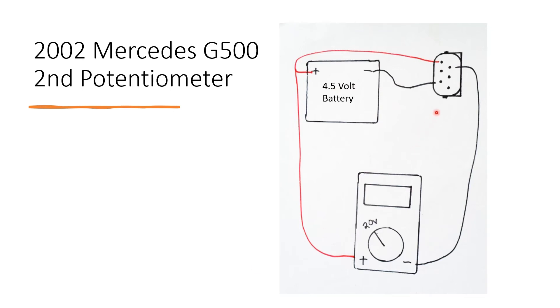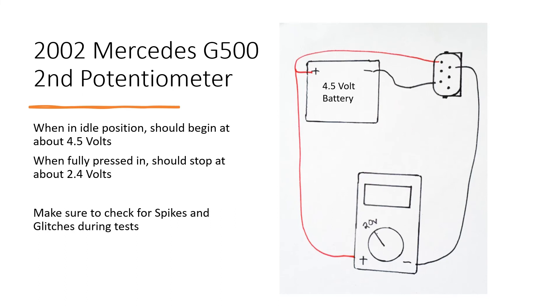I should state that this pin right here, the middle left, will never be used in this test. So in its idle position it should read about 4.5 volts once more, and as you press it in it should stop around 2.4 volts. You are checking for spikes and glitches during these tests.